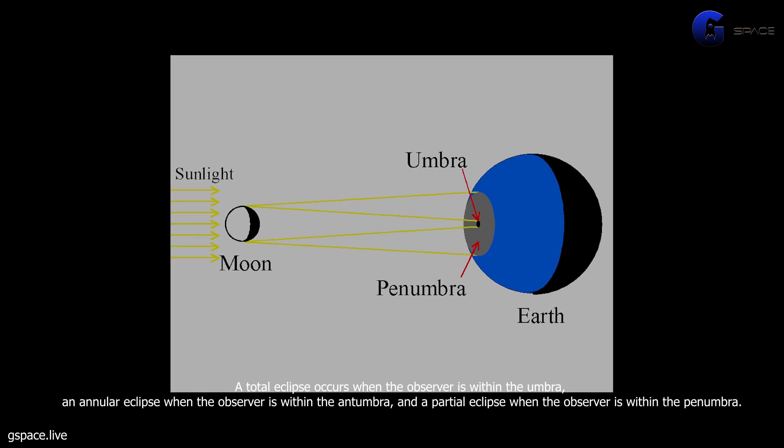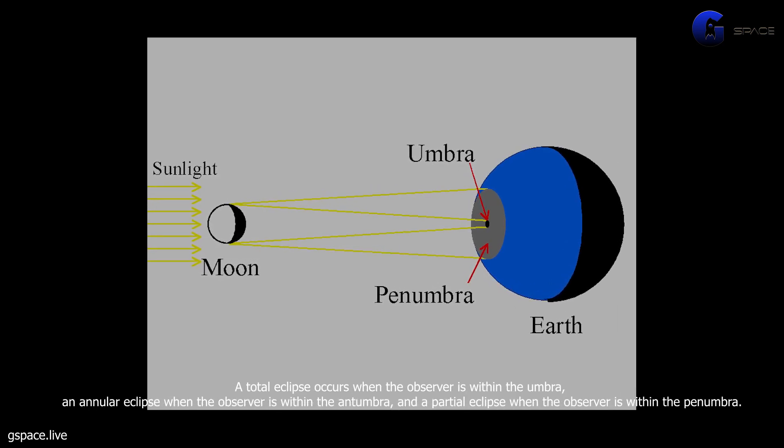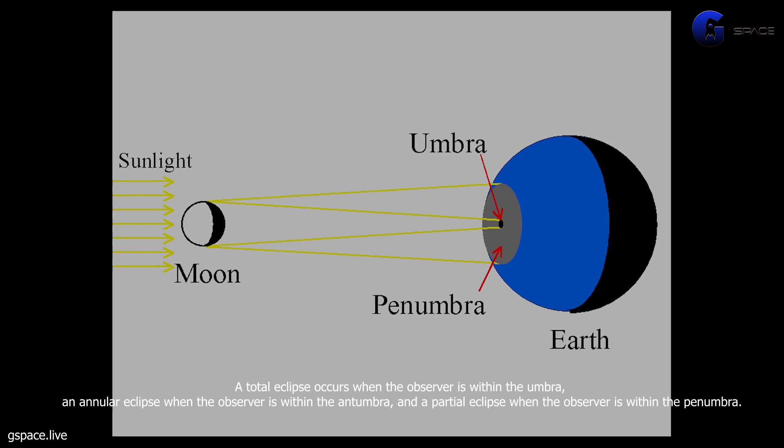A total eclipse occurs when the observer is within the umbra, an annular eclipse when the observer is within the antumbra, and a partial eclipse when the observer is within the penumbra.